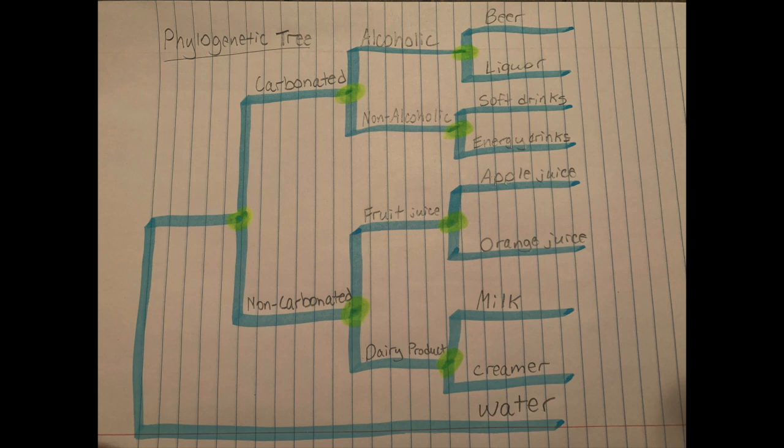The node where water diverges shows that all other drinks have a common ancestor. At this first node, the drinks diverge into carbonated and non-carbonated drinks.